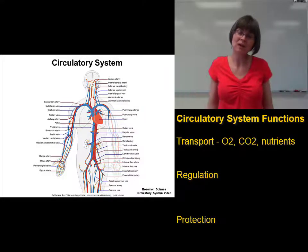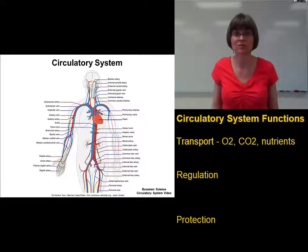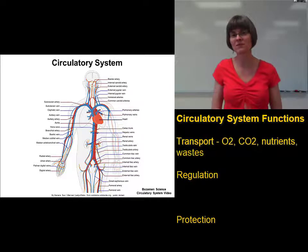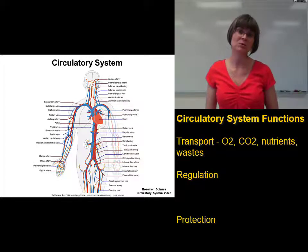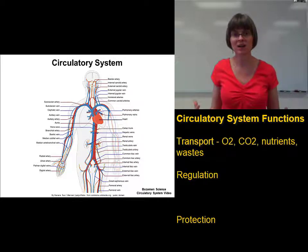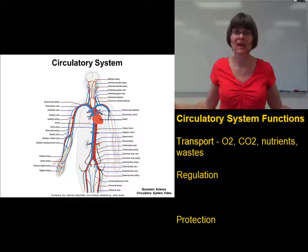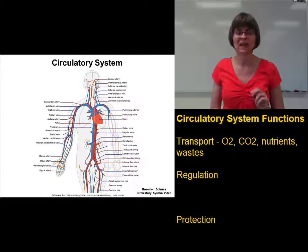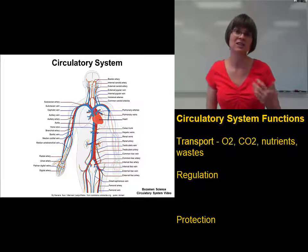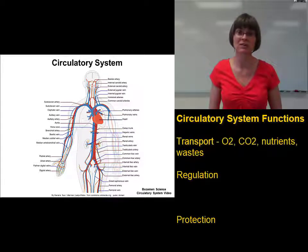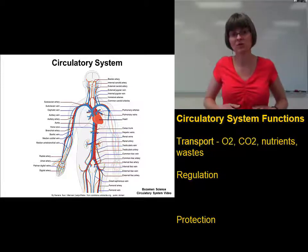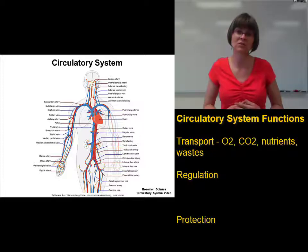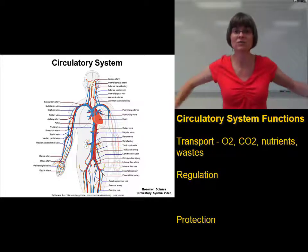In the same way we take nutrients out to the cells, the circulatory system is important for carrying waste products away from the cells. Your cells generate a lot of waste products from breaking down proteins and nucleic acids. These waste products have to be gathered from the cells and carried to areas where they can be eliminated — things like bilirubin, urea, uric acid, creatinine, and ammonia. Mostly these go to the liver, which can break down many waste products, or to the kidneys, which filter them out in the urine.